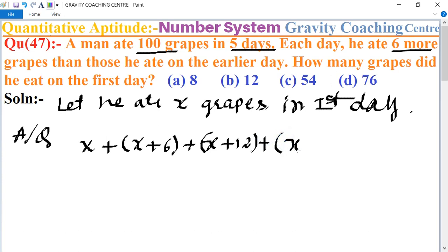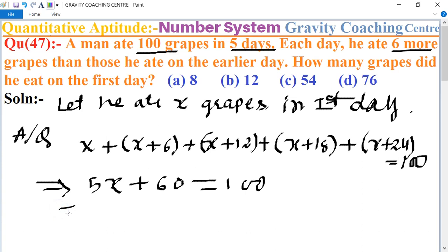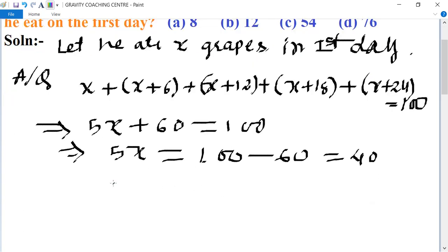Equal to 100. So now we calculate 5x plus 60 equal to 100. This implies that 5x equal to 100 minus 60 equal to 40. Therefore x equal to 40 upon 5, which is 8.